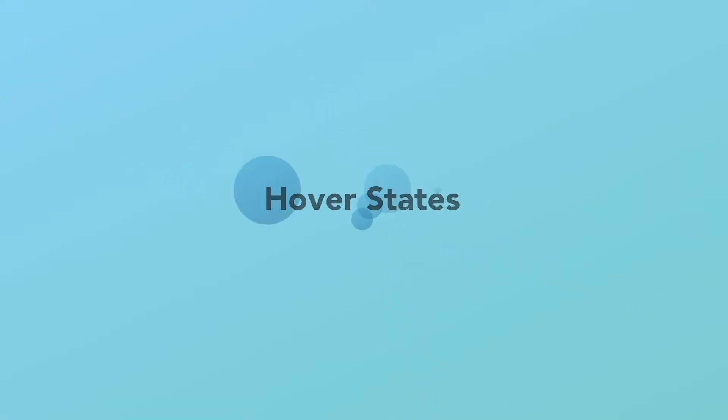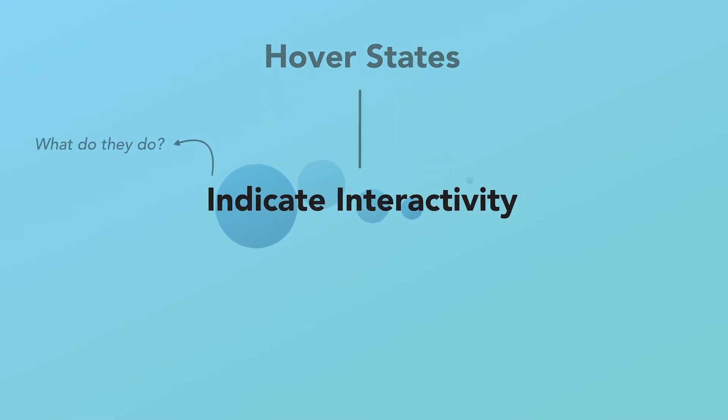So, hover states. Hover states are designed to indicate interactivity — that you can interact with a thing over which you are hovering in some way. Normally it's just clicking. So it could be a photo, a card, or some text, saying, hey, you can click on me and something is going to happen. Most of the time it means you're going to go to another page.